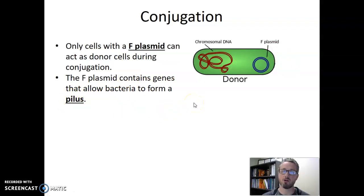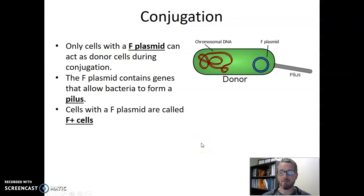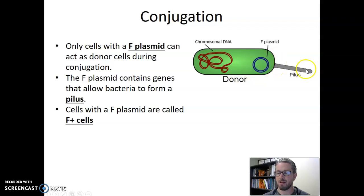The F plasmid contains genes that allow the cell to build a specific structure called a pilus. We know from microbiology that the pilus is capable of transferring genetic material from one cell to another. The donor cell has the F plasmid and can therefore grow this pilus structure. Any cell that has an F plasmid and is capable of making a pilus is given a specific name: we call it an F plus cell. F plus stands for being positive for the F plasmid.